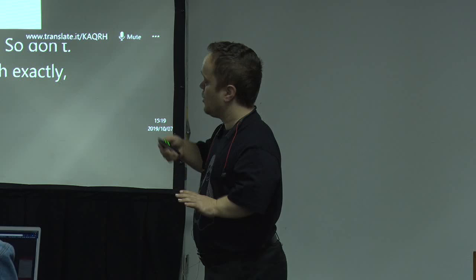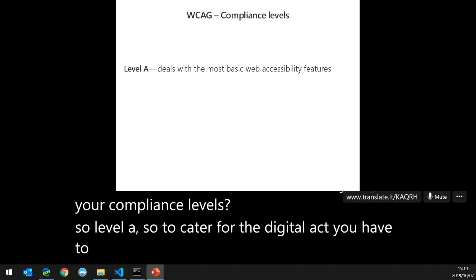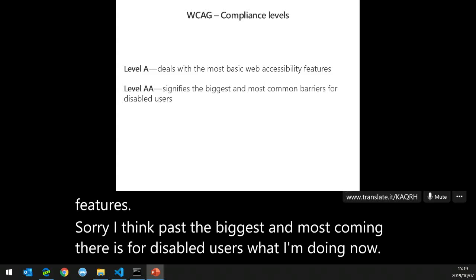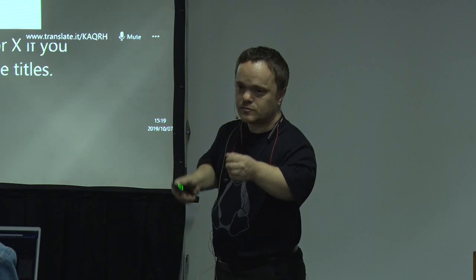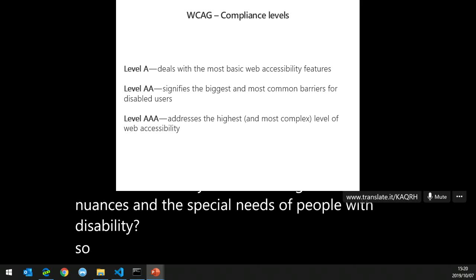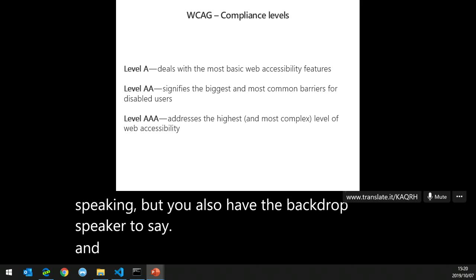There are compliance levels. Level A covers the most basic web accessibility features. Level AA addresses the five biggest and most common barriers for disabled users — what I'm doing now with these subtitles is AA. If you have a video on your site, you need subtitles for AA. Level AAA means catering for the nuances and special needs of people with disabilities — for example, if you have a video showing a cat, a narrator would describe both the speaker and the backdrop, giving full contextual audio description.